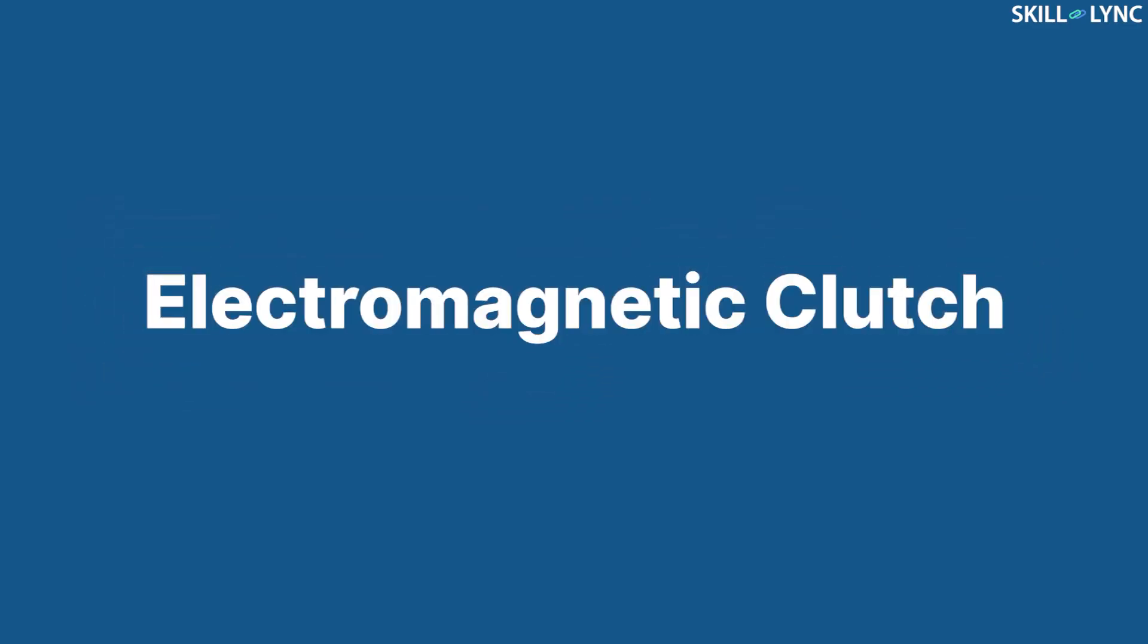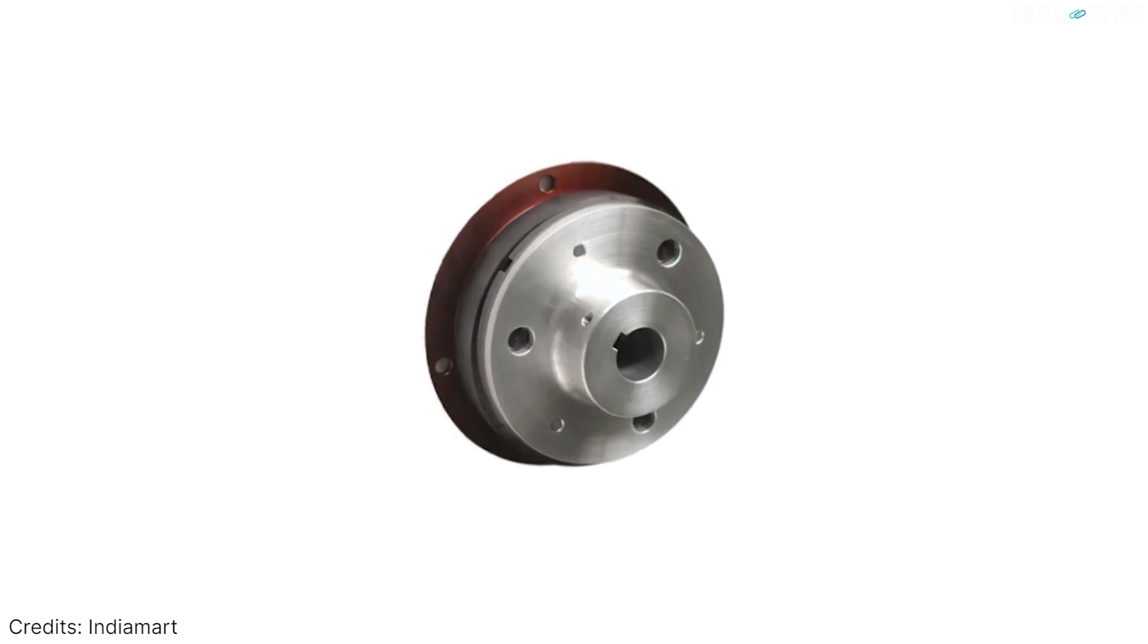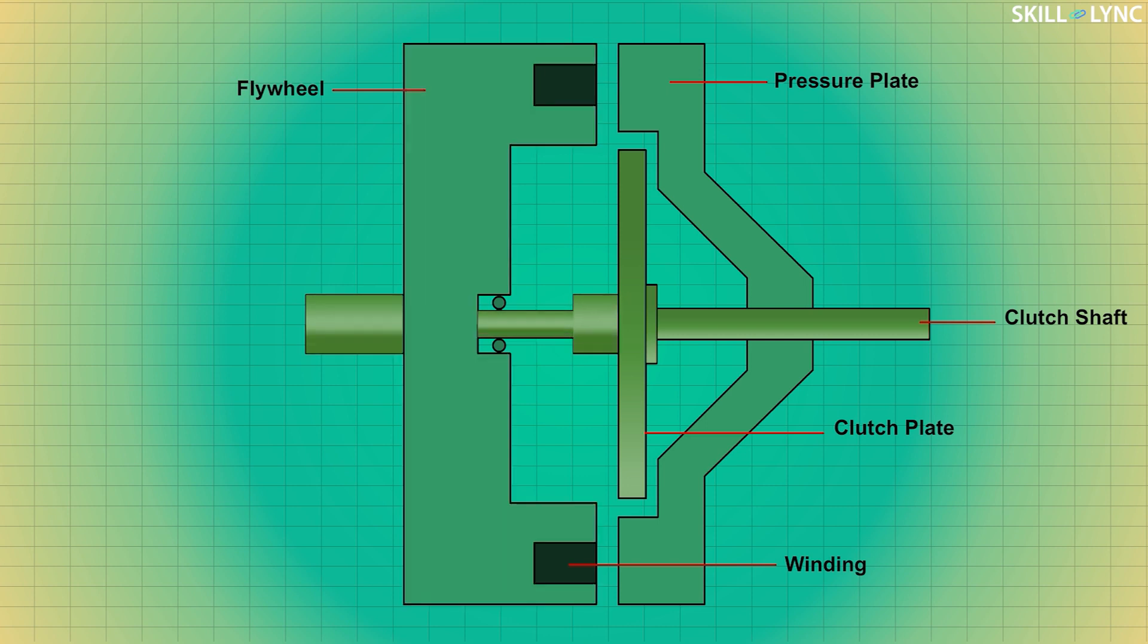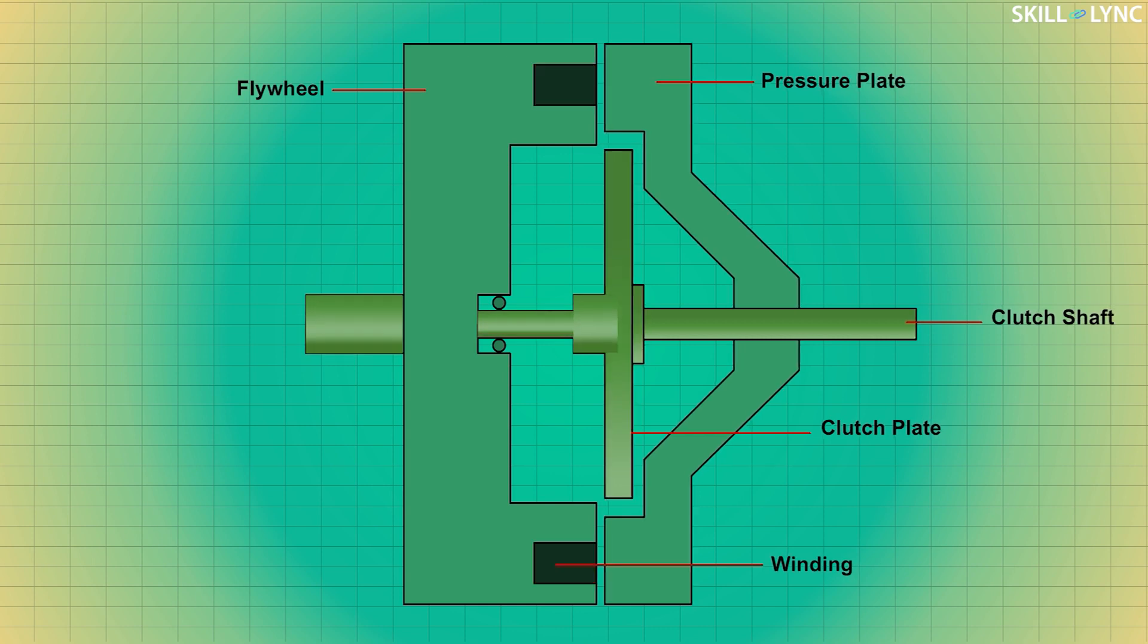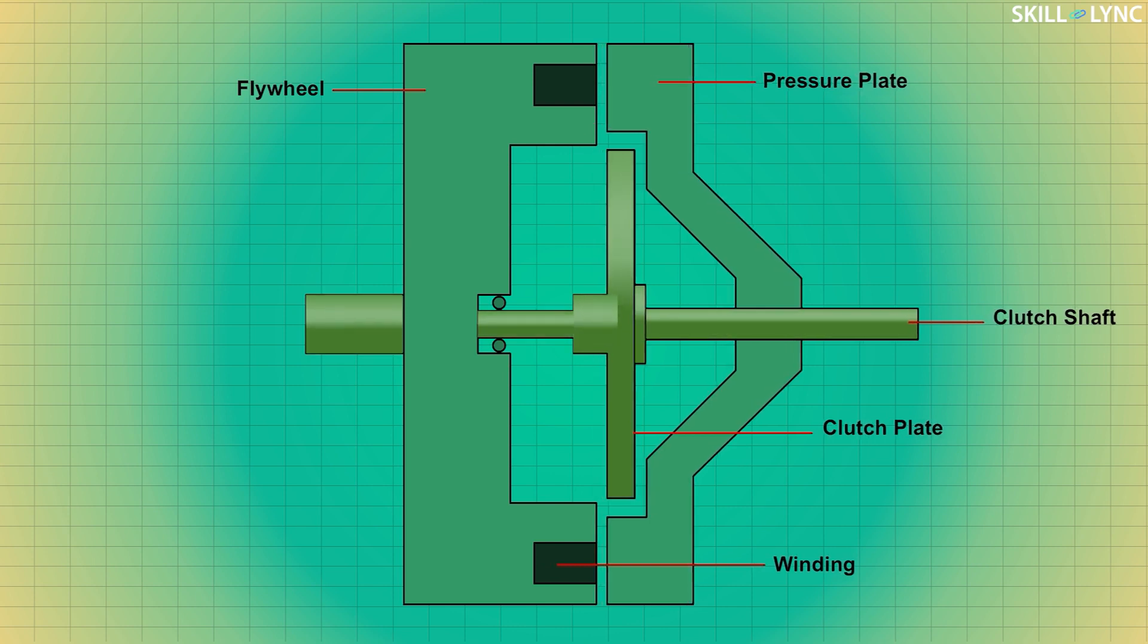Then we have an electromagnetic clutch. As the name says, these clutches use electromagnetic force for engaging and disengaging. Here the flywheel is provided with windings which get energized on the supply of current. The energized winding acts as an electromagnet and attracts the pressure plate towards it. Thus the clutch is in engaged position.